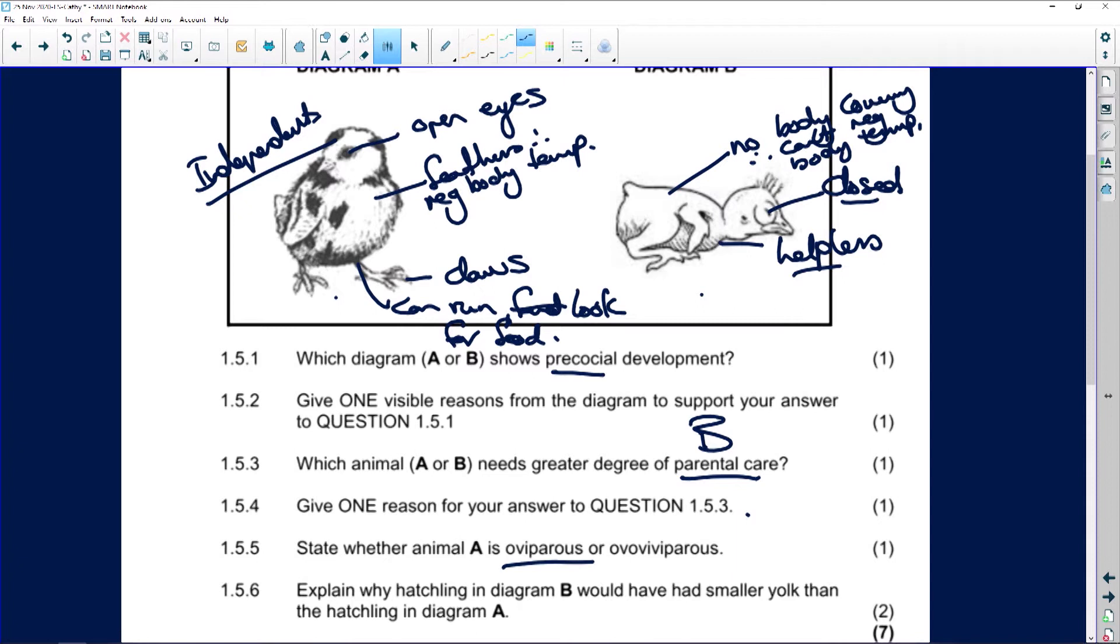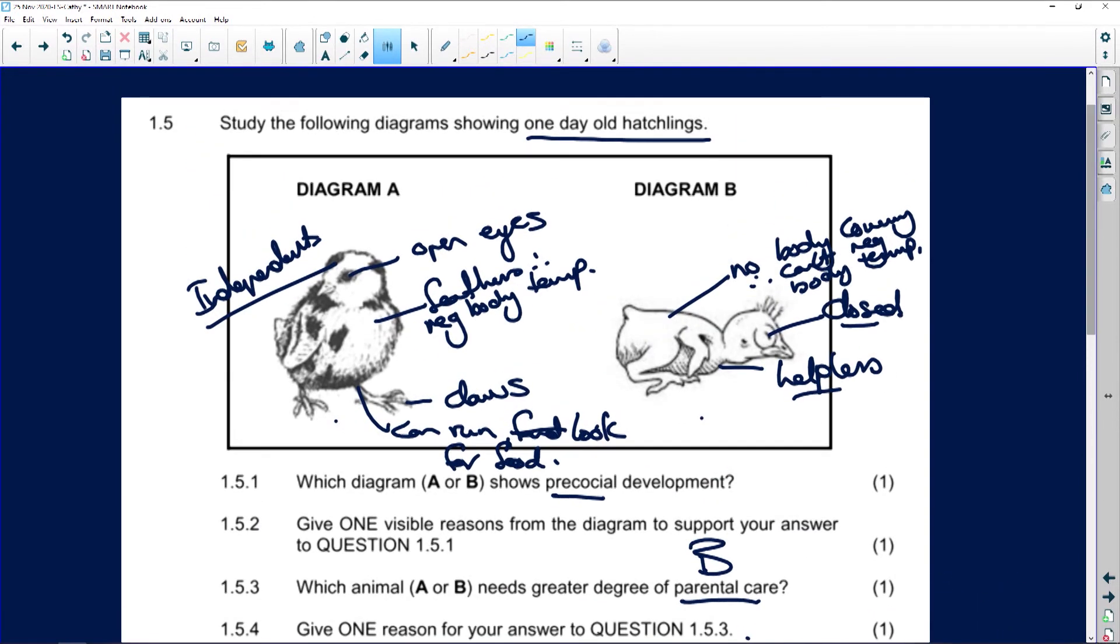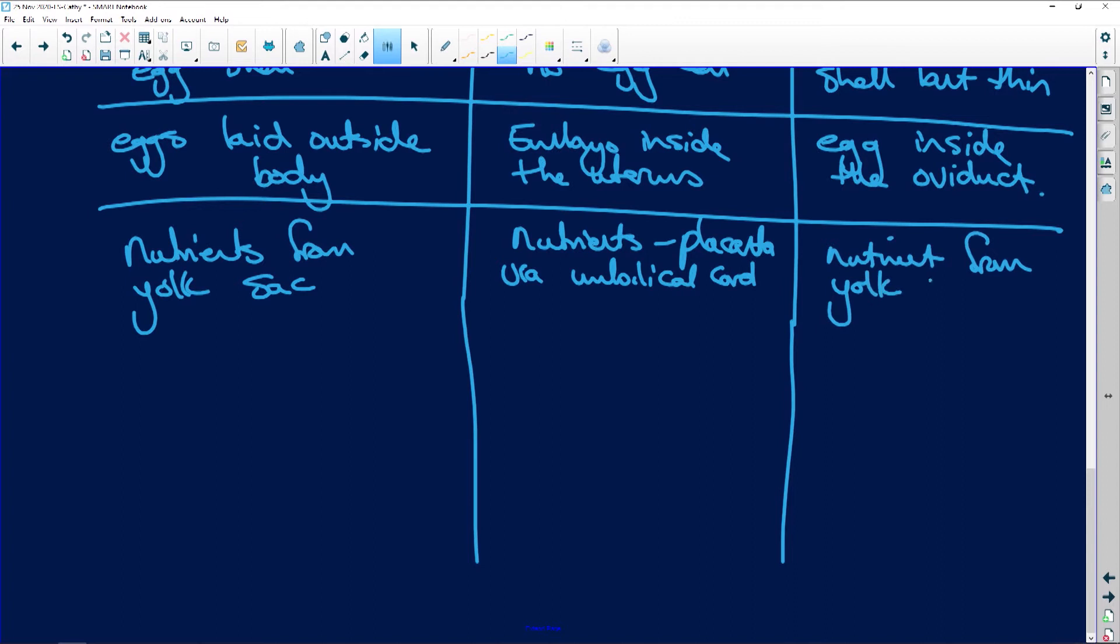State whether animal A is oviparous or ovoviparous. I'm going to go through that. I want to give you a table that you need to know, and we're going to do it today so that you know it, you don't have to learn it. And then explain why hatchling in diagram B would have a smaller yolk than the hatchling in diagram A. Well, because the hatchling in diagram B is more developed when it hatches, and therefore it's going to need more yolk and more nutrition so that it can be more developed when it hatches, than in diagram B where it needs a smaller yolk because its development is going to depend on the parents taking care of it and greater parental care.